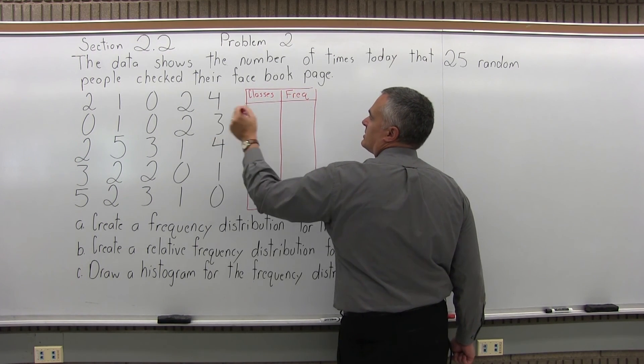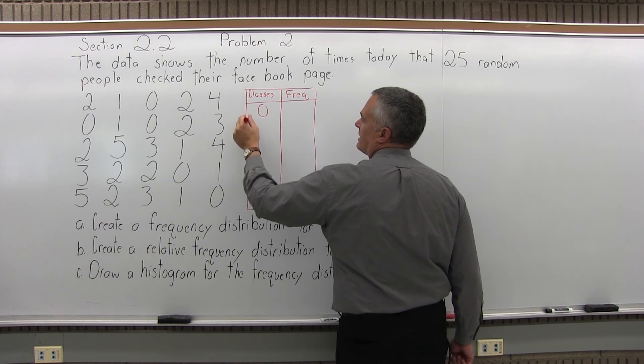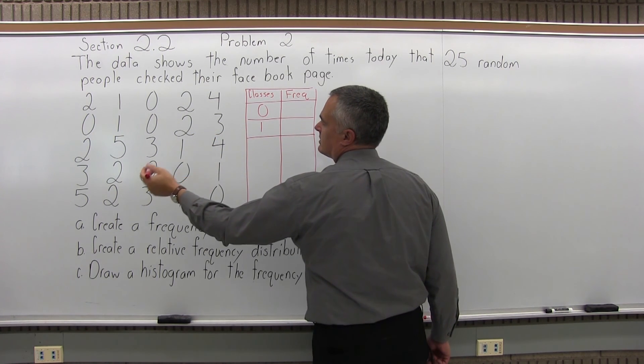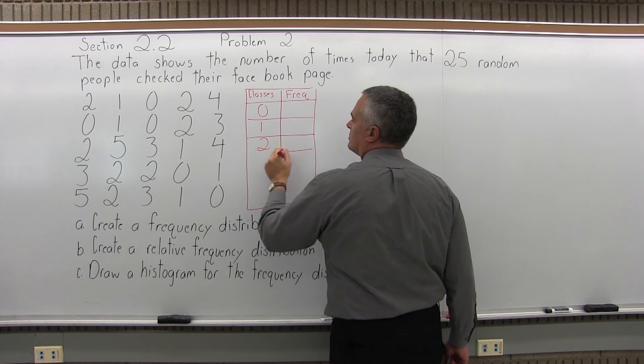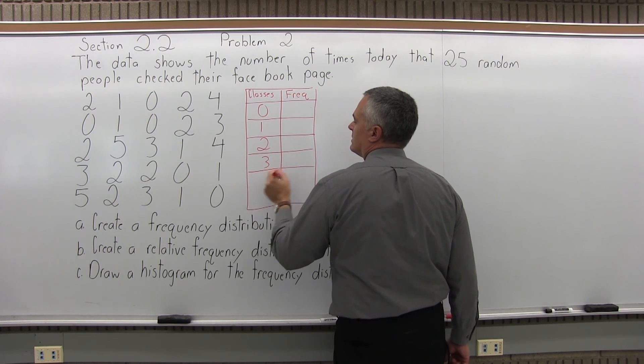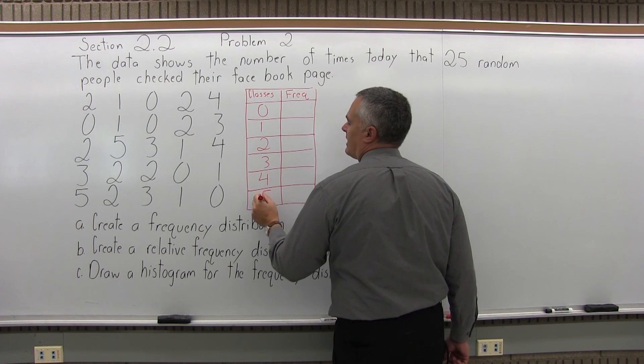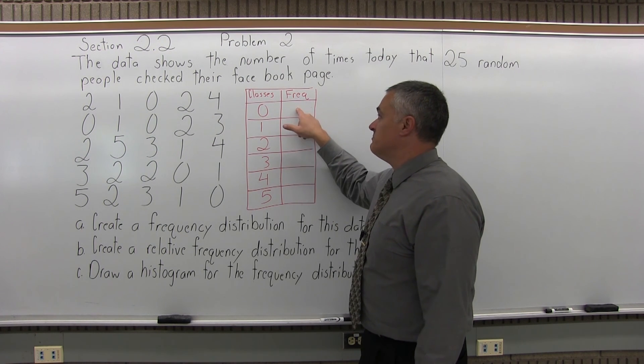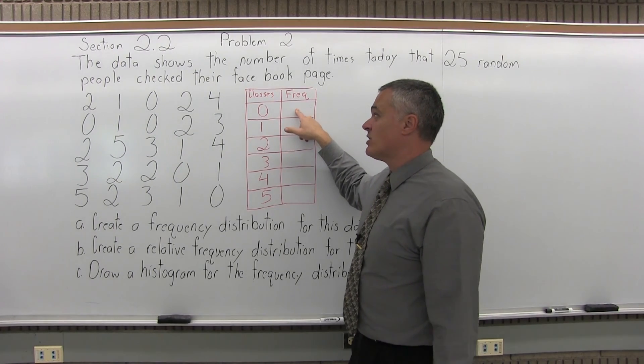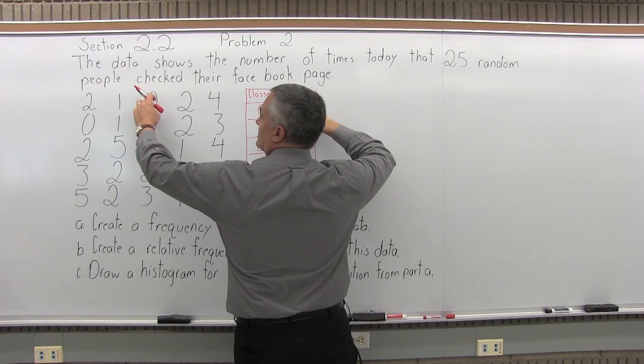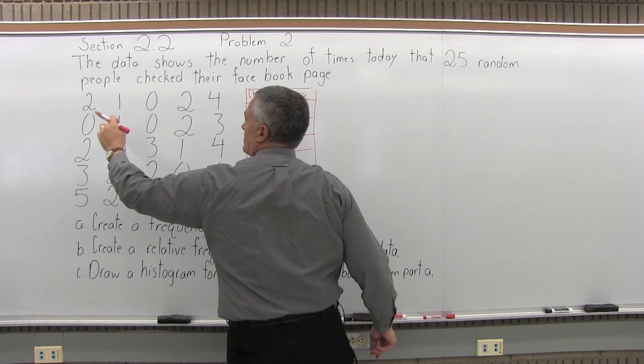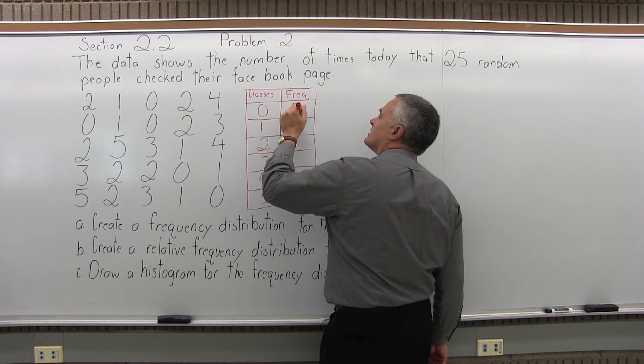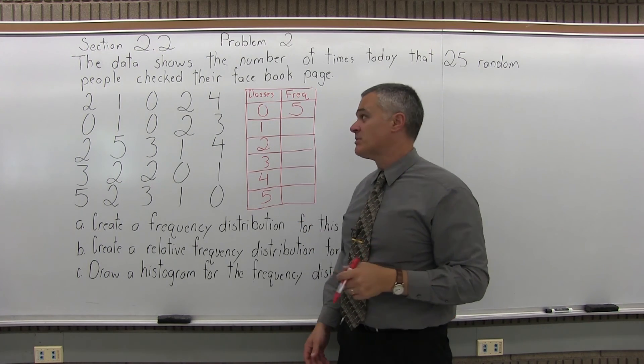So we can label this classes and frequencies, which I'll abbreviate. So some people checked their Facebook page not at all during the day. A few people checked it once, and the biggest number was 5. So let's go 2, 3, 4, 5. And now what we want to do is carefully count out how many times, how many of those 25 people checked their Facebook page 0 times or not at all. So coming across the top row there's 1, then 2, 3, 4, 5. There was a frequency of 5 for the number of people who checked their Facebook page 0 times in the day.